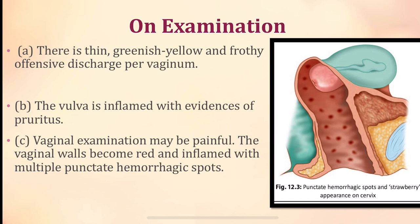On examination, there is a thin, greenish-yellow, frothy, and offensive discharge. The vulva will be inflamed with evidence of pruritus. The vaginal examination will be painful, the vaginal walls become red and inflamed with multiple punctate hemorrhagic spots — this is the typical appearance of a patient with trichomoniasis.